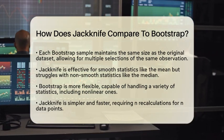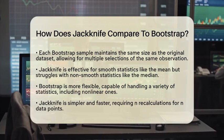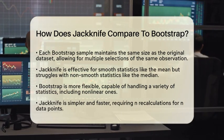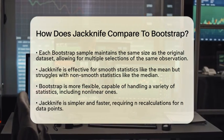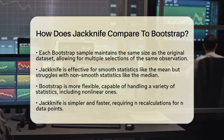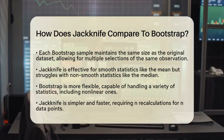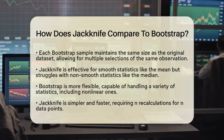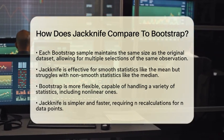Now let's compare some key features of these two methods. When it comes to applicability and accuracy, Jackknife works well for smooth statistics like the mean. However, it struggles with non-smooth statistics, such as the median. Bootstrap, in contrast, is more flexible and can handle a wider variety of statistics, including nonlinear ones.